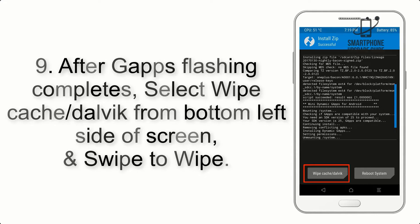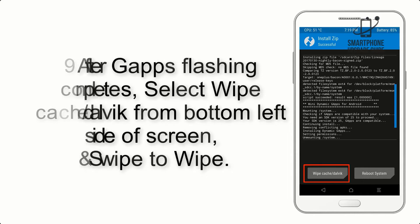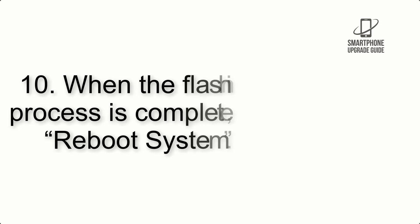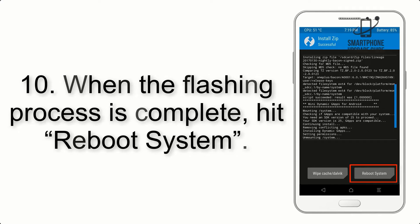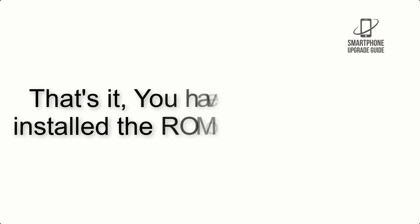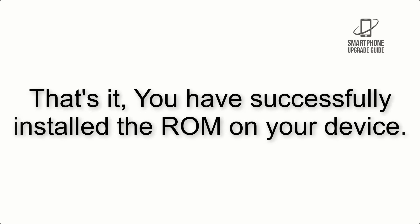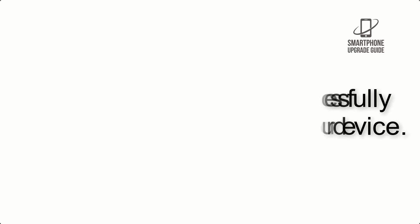Step 9: After GApps flashing completes, select Wipe Cache and Dalvik from the bottom left side of the screen and swipe to wipe. Step 10: When the flashing process is complete, hit Reboot System. That's it — you have successfully installed the ROM on your device.